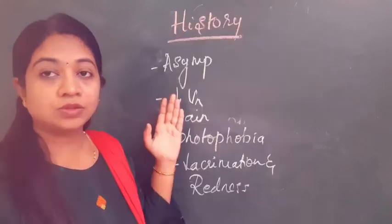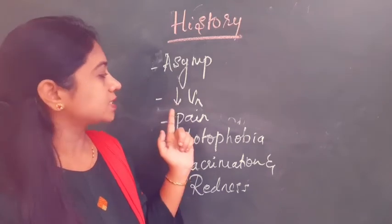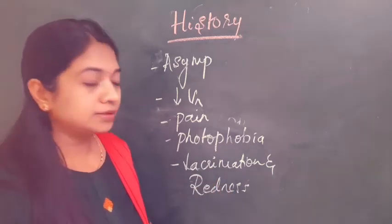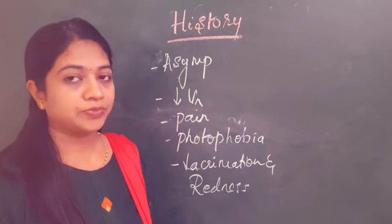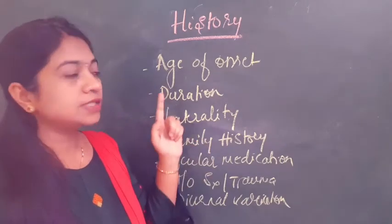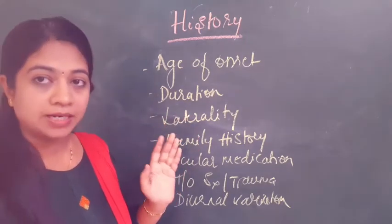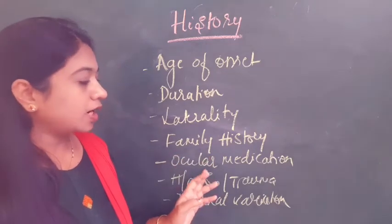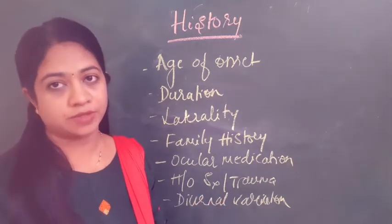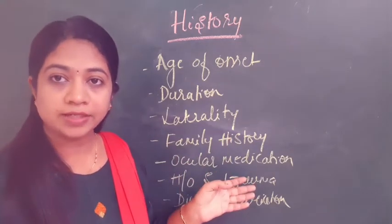Regarding symptoms, the patient can be completely asymptomatic or may present with decreased vision, pain, photophobia, lacrimation, and redness of the eye. When a patient presents with those symptoms, ask in detail about age of onset, duration, laterality — whether bilateral or unilateral — family history, ocular medications, history of surgery or trauma, and diurnal variation of symptoms. This history will help point out the cause for the corneal edema.